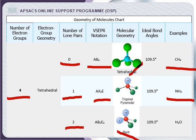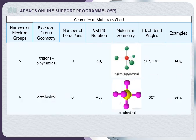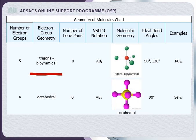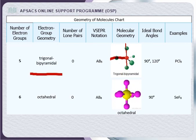Two more geometries: AB₅ type and AB₆ type. In AB₅, the central atom is linked with five bond pairs and no lone pairs. The expected geometry is trigonal bipyramidal, with two types of bond angles: 90° between axial and equatorial positions, and 120° among the three equatorial bonds. The example is PCl₅.